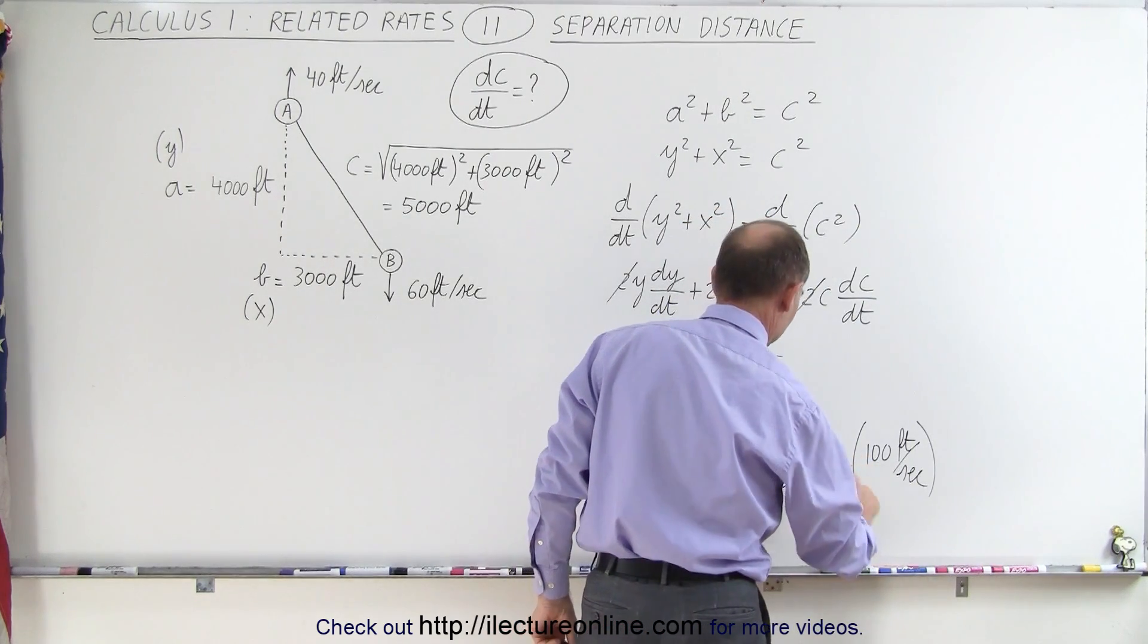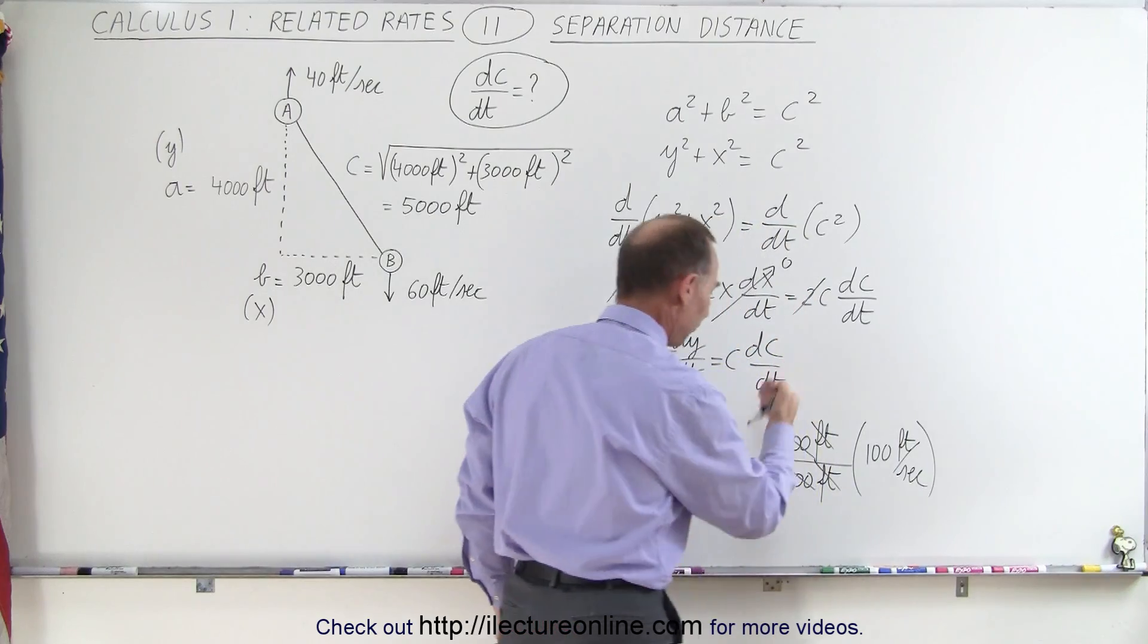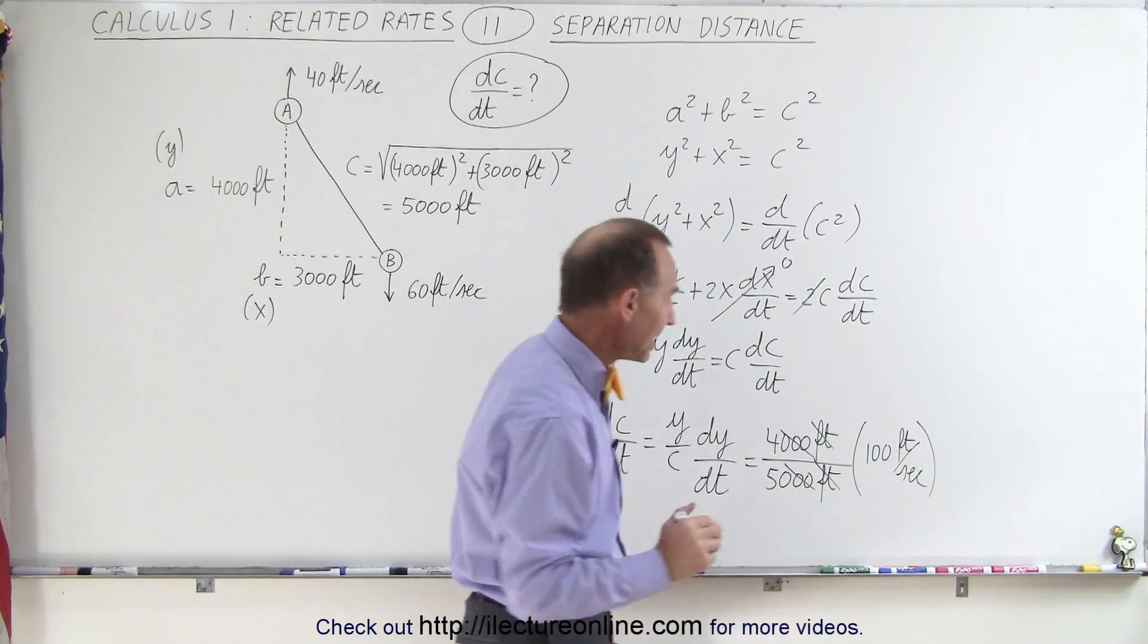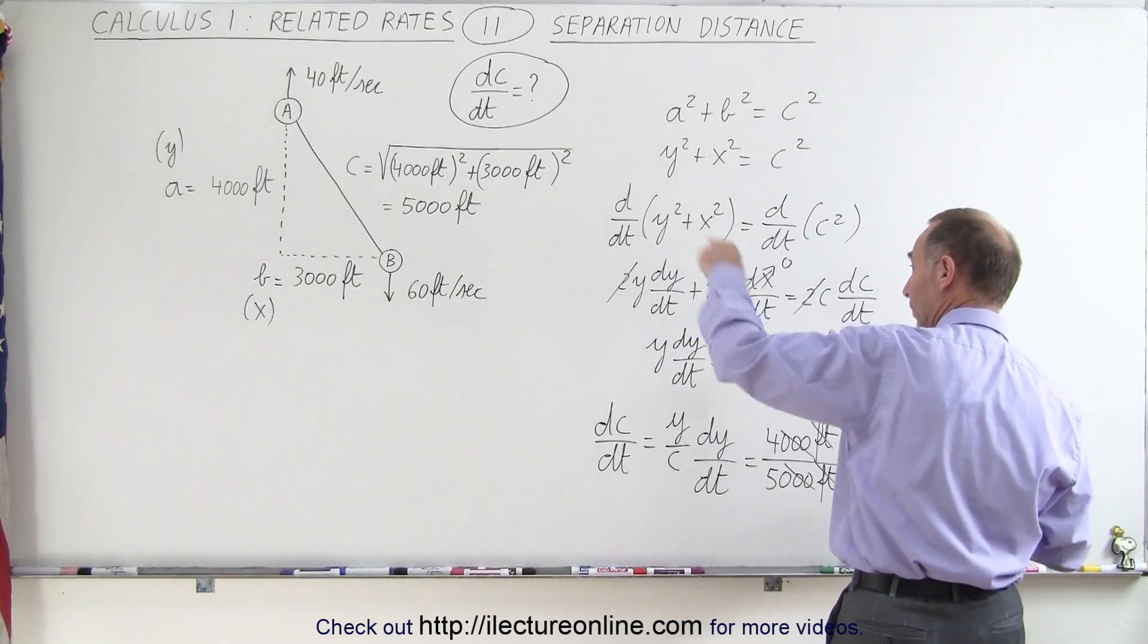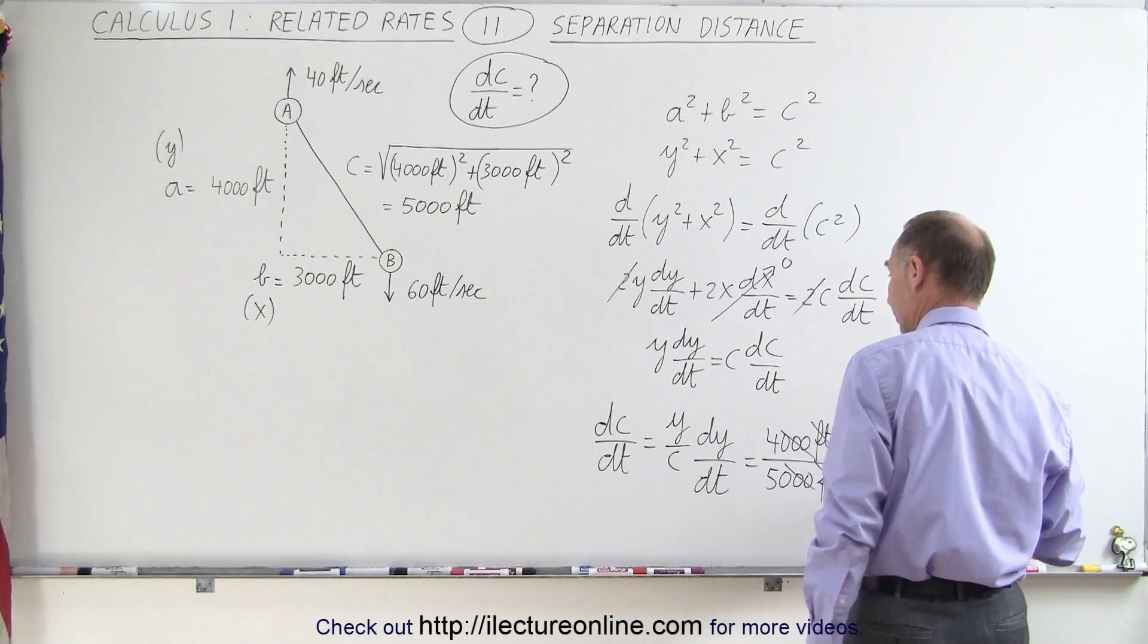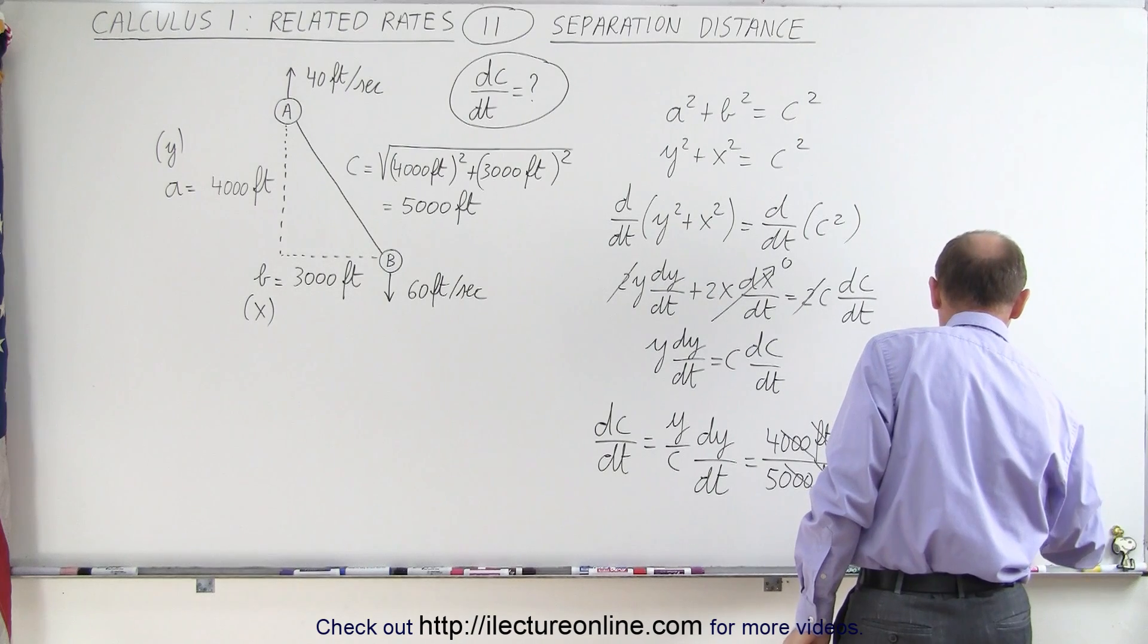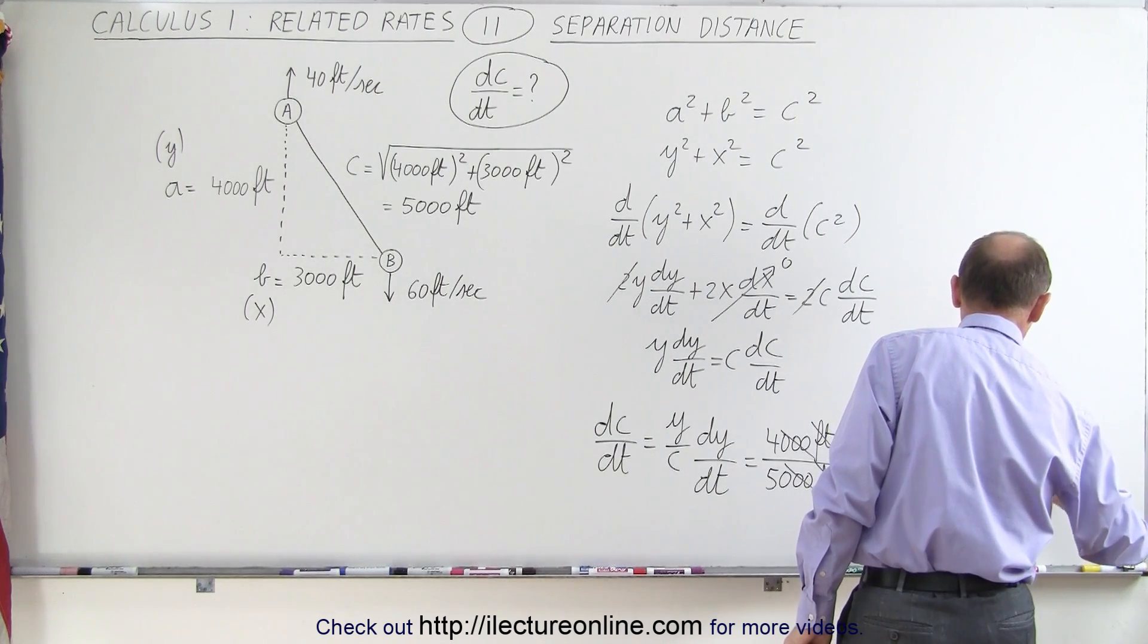So the feet cancel out here, the zeros cancel out here. So we have 4/5 times 100, that would be 80. So the change in separation distance in the diagonal direction is going to be 80 feet per second.